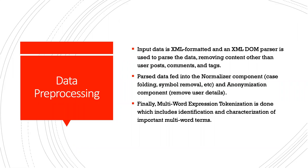For pre-processing of the data, all input data was put into an XML format and an XML DOM parser was used to parse the data, removing content other than user posts, comments, and tags — such as usernames, ranking systems, or rating blurbs. Parsed data was fed into the normalizer component, which did case folding and symbol removal. So text was moved to lowercase and punctuation like question marks and commas may have been removed. Everything was made anonymous so that all user data — usernames, email addresses — was taken out.